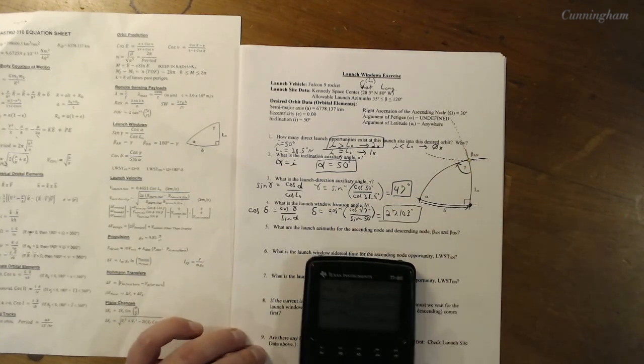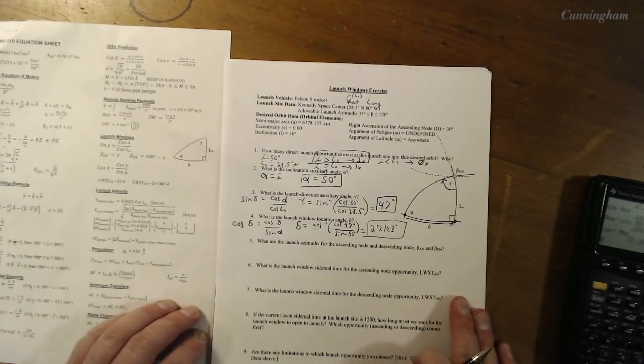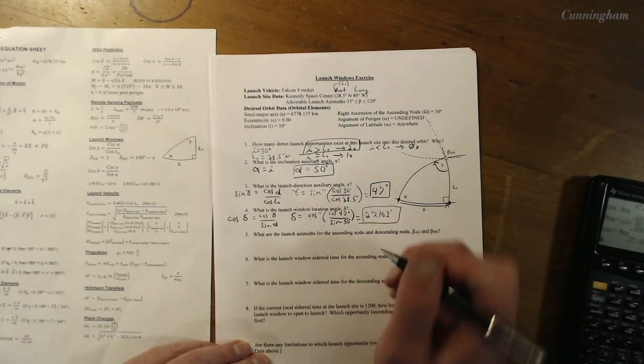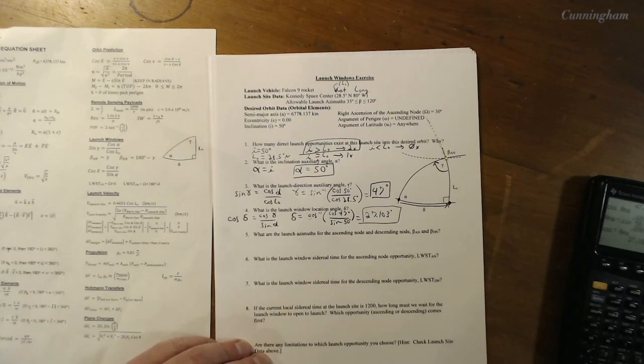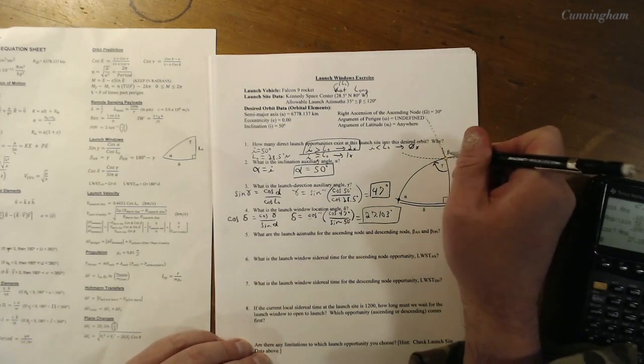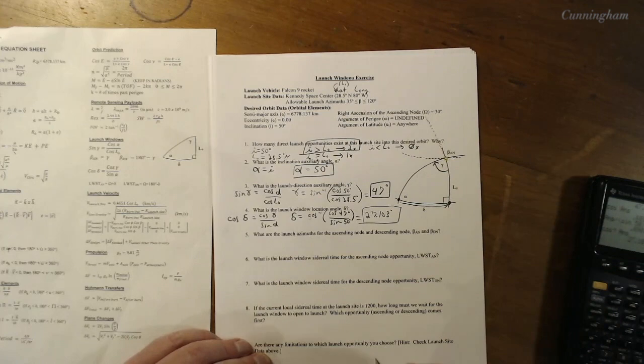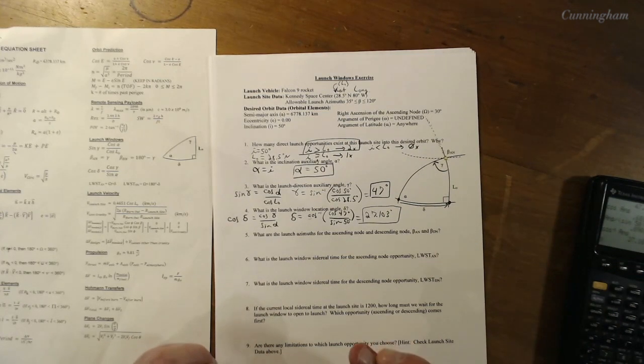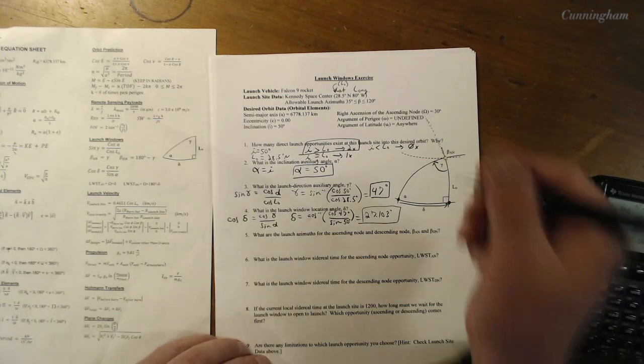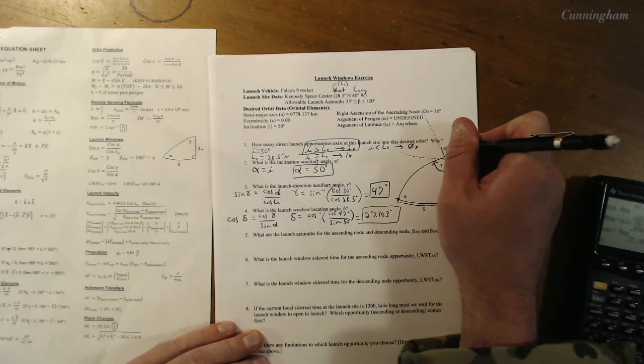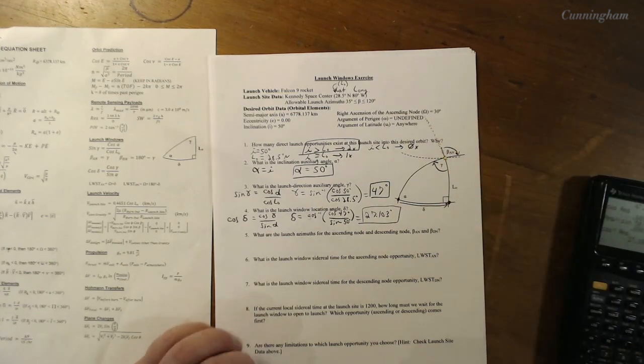Now launch window location angle. That's the third angle that completes kind of this spherical triangle here if you will. That is a right angle, but this right here is measured from the point where this line coming up intersects the equator all the way around to where the longitude line that comes down and intersects your launch site then comes down and hits the equator. So again, the little triangle chunk here of the earth that we're dealing with can be tough to visualize, but the math, it's really straightforward that the equation sheet walks us through. So let's find the cosine of our launch window location angle, and that is according to the equation sheet the cosine of gamma which we just found over the sine of alpha which we just found. So let's plug and chug as we do. Cosine inverse of cosine of 47 degrees over sine of 50. I get 27.103 degrees out of that.